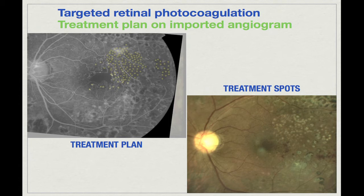Precisely targeting just that area would be almost impossible with regular laser, because we would have to look after every application back at the fluorescein angiogram and go back and forth. And even then, delineating the margins of those areas of non-perfusion would not be possible. With this technology, we can do it automatically, precisely target the areas we want to treat, safely stay away from vital structures such as the fovea, target ischemic areas, and avoid ablating remaining healthy tissue.